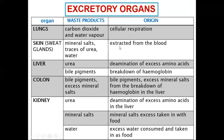Urea is extracted from the blood by the liver. It is a result of deamination — the removal of the amino group from a protein. The protein is converted into urea. We don't store excess proteins in the body; instead, excess proteins are deaminated, meaning the amino group is removed and converted into urea.